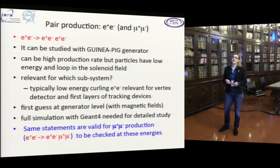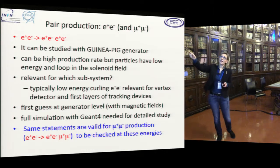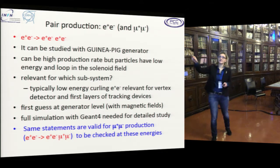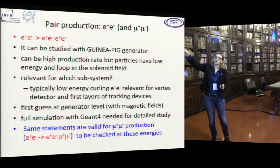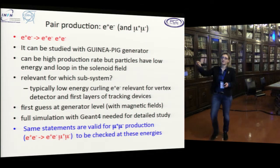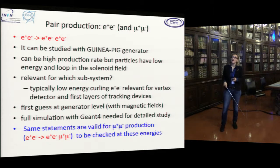Pair production is also important and has to be studied carefully. It can be studied with Geant4 generation and can have a high production rate, but the particles have low energy and loop in the solenoid field. We need to understand for which subsystem it is relevant — typically low energy e-plus e-minus pairs are very relevant for the vertex detector and first layers of tracking devices. Full simulation with Geant4 is needed. The same statements are valid for muon production, to be checked at this energy.